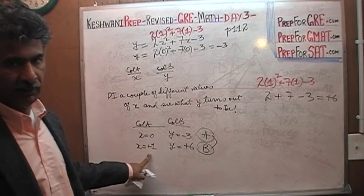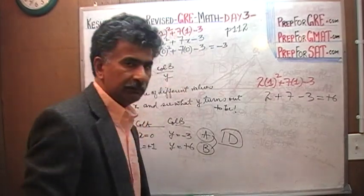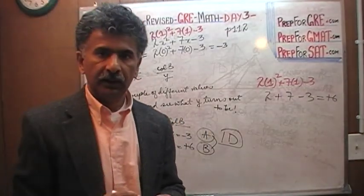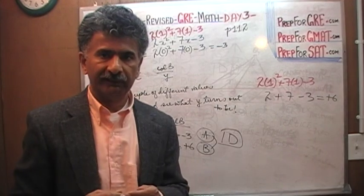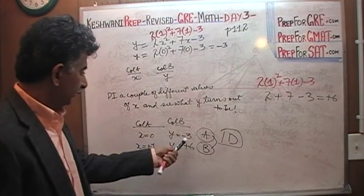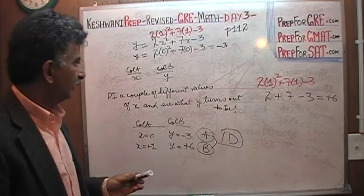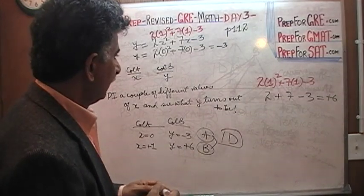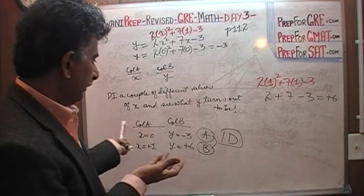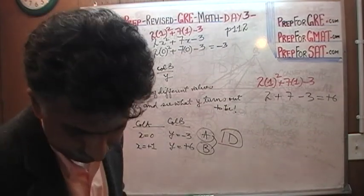Before, the answer was A. We have a conflicting answer. Therefore, because we have conflicting answers, the correct answer is D, because it cannot be determined which one is bigger, x or y. It depends on what values of x we plug in. If we plug in zero, it turns out to be negative 3. If we plug in one, it turns out to be six. If you plug in something else, it might change again, but we don't want to do that because we have conflicting answers. The answer is D.